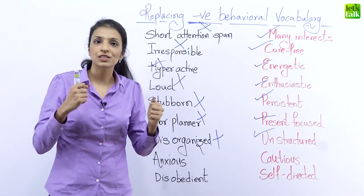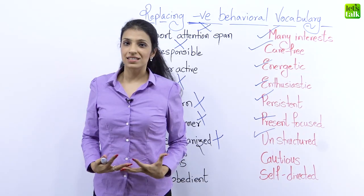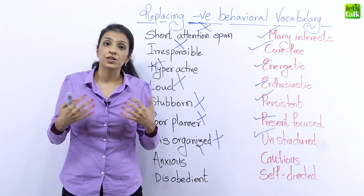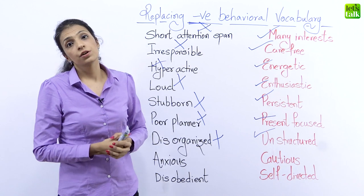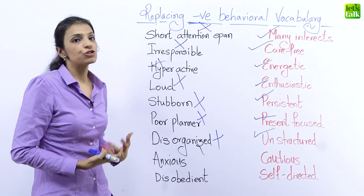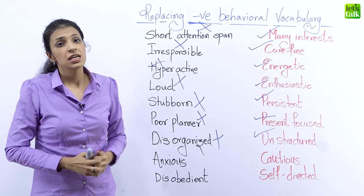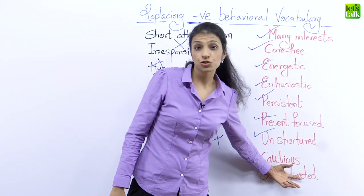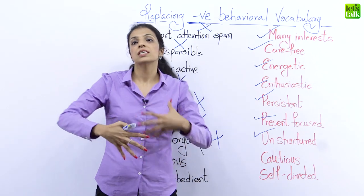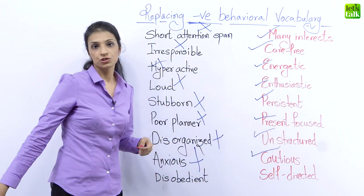Anxious — something all of us feel when we take big decisions in our life. Anxious comes from anxiety: it's a feeling of nervousness, a little fear, butterflies in your stomach. It could be before examination results, joining a new job, during appraisals, or heading to your boss's cabin after making a mistake. If I'm taking a big decision, I'm going to feel anxious. So instead of saying I feel anxious, say I'm cautious. Cautious means you do not rush into things — an anxious person will be careful before taking a step. Avoid anxious; use cautious.